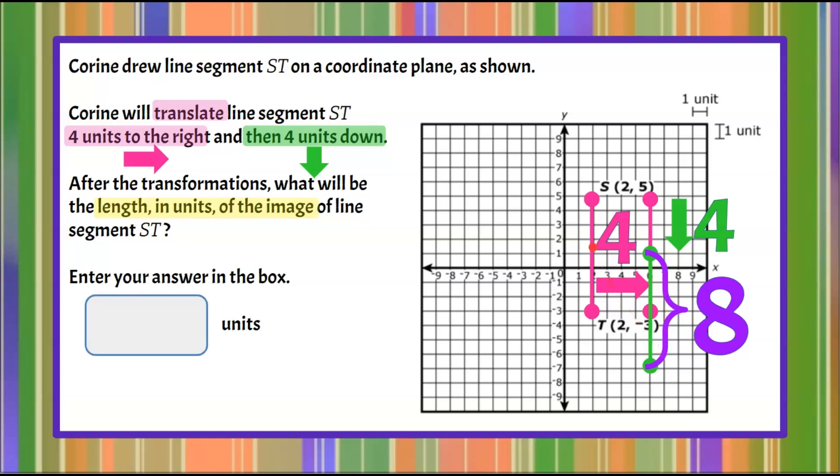I want you also to understand that our original figure, our original segment here, one, two, three, four, five, six, seven, eight, is also eight. And that is very good that that happened because all translations must result in an image that is congruent to the original. So the line segment ST and the image after this translation are both eight units long.